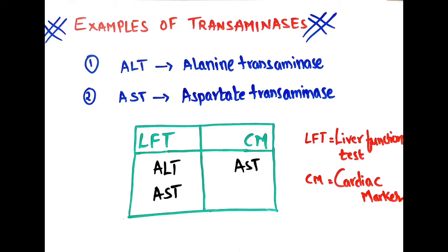Examples of transaminases are ALT and AST. ALT is alanine transaminase and AST is aspartate transaminase. These transaminases are also known as aminotransferases because they are involved in the transfer of the amino group.